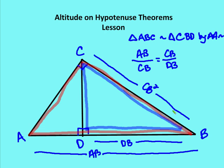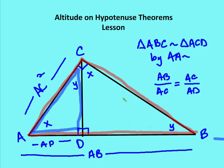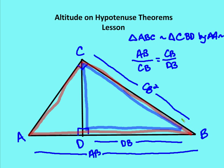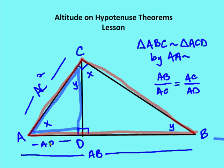We end up with CB squared equal to DB times AB. Notice the similarity between these two equations: AC squared equals the corresponding smaller segment AD times the entire hypotenuse AB. CB squared equals the right-hand portion of the base DB times the entire hypotenuse AB. So CB squared is equal to DB times AB, and AC squared is equal to AD times AB.